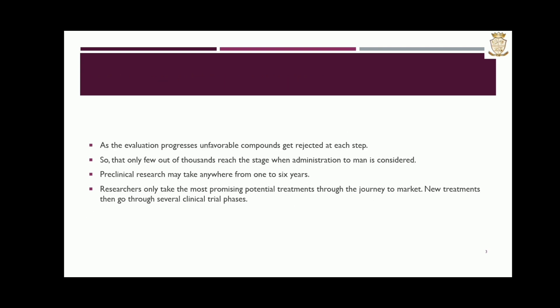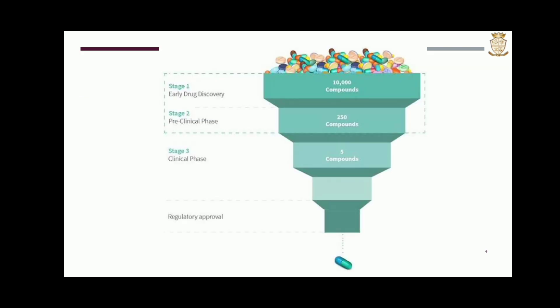As the evaluation progresses, unfavorable compounds get rejected at each step. Preclinical research may take anywhere from 1 to 6 years. Here we can see the image of the drug discovery process. In the early drug discovery phase there are 10,000 compounds, but in the next phase — the preclinical phase — only 250 compounds remain, because other compounds are rejected in the early drug discovery phase.